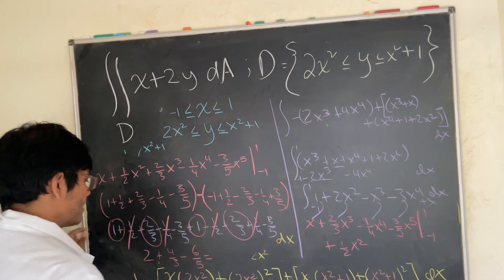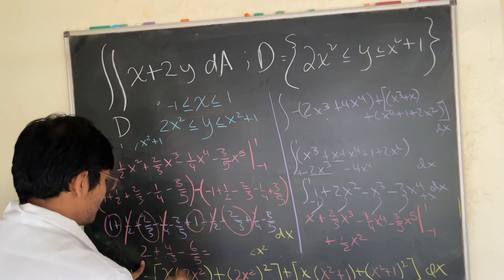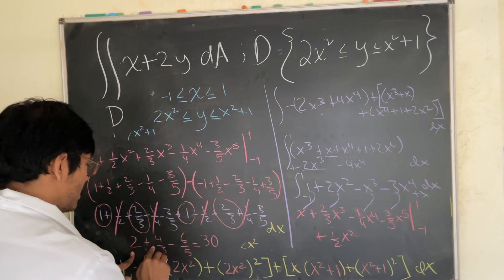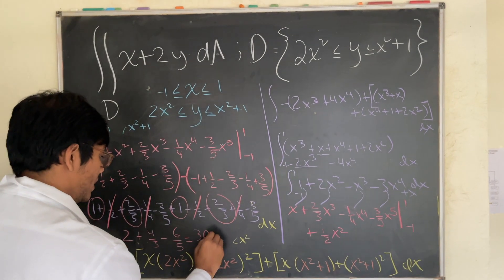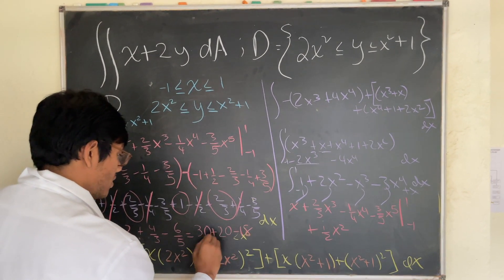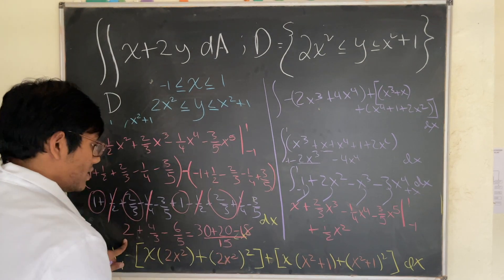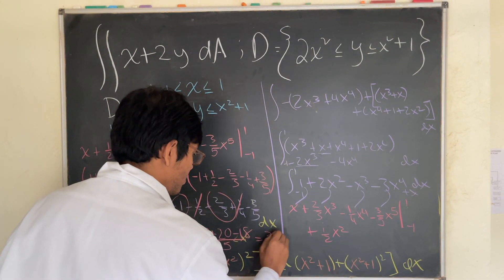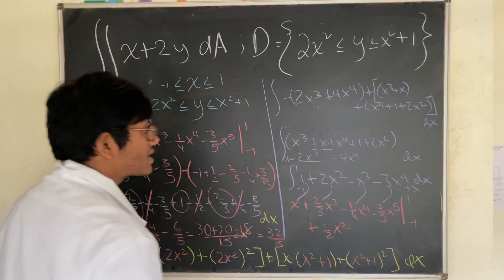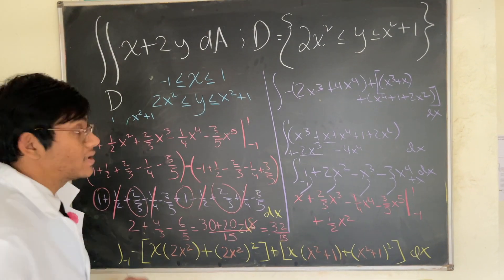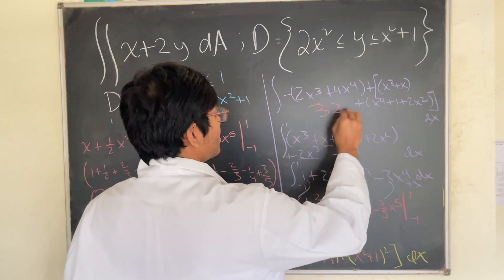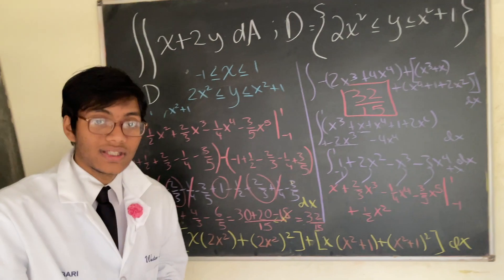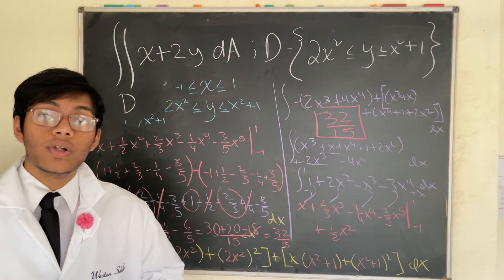Simplifying by multiplying over 15: 2 becomes 30, four-thirds becomes 20, and negative six-fifths becomes negative 18, all over 15. So 30 plus 20 minus 18 equals 32, giving us a final answer of 32 over 15. Thank you folks for watching this episode!